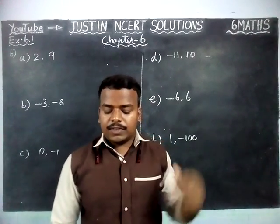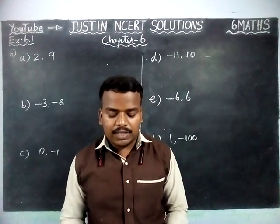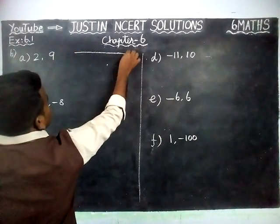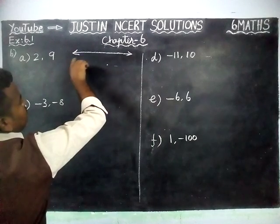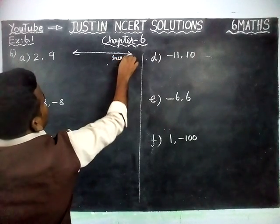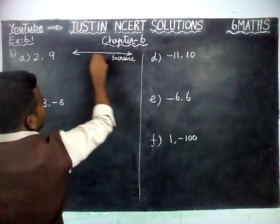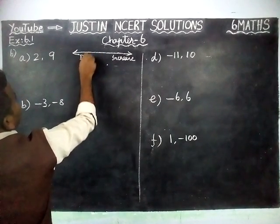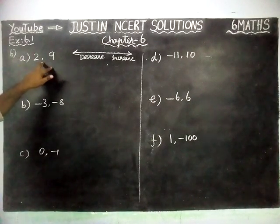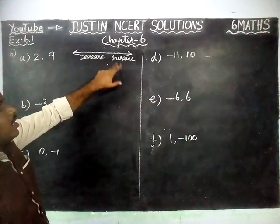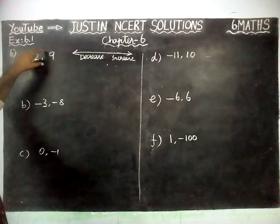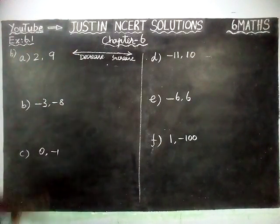The question is: in each of the following pairs, which number is to the right of the other on the number line? The number line is very important. When we are moving to the right hand side, the value will increase. When we are moving to the left hand side, the value will decrease — we saw that in the introduction video. So, if we find which number is the smallest, that number will come on the left hand side; the greatest number will come on the right hand side. Now firstly we compare the numbers, then according to that, we can decide its position on the number line.